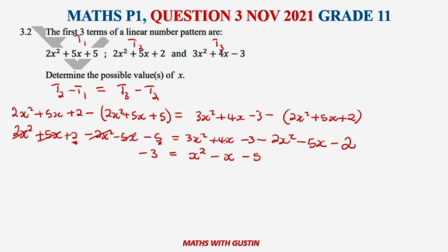We need to take this -3 to this side: x²-x-5+3 equals 0. We need to simplify this further: x²-x-2 equals 0.